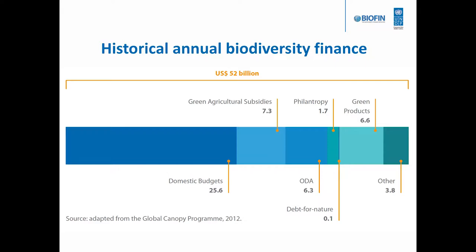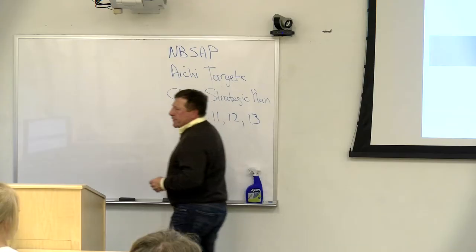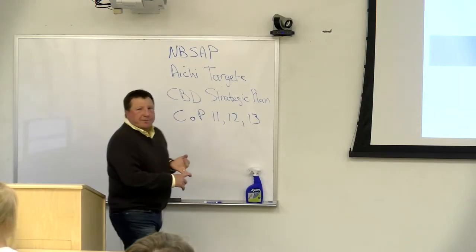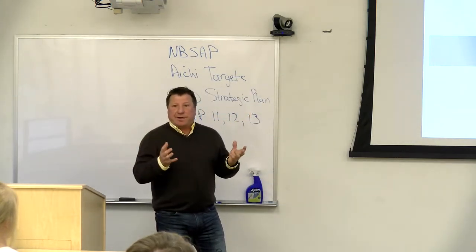What does biodiversity revenue look like? The Global Canopy Programme shows the primary sources of biodiversity investment worldwide. You might have thought a lot came from official development assistance — aid. But the lion's share comes from domestic budgets in developing countries. Then green subsidies, philanthropy at 1.7, green products like forest-certified products and shade-grown coffees at 6.6 — summing to an average of about $52 billion per year currently being spent.